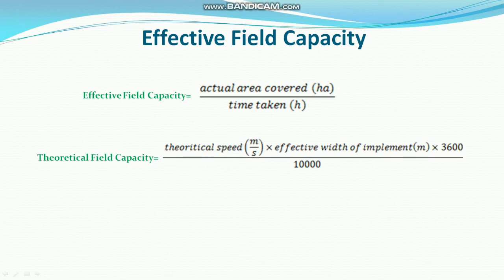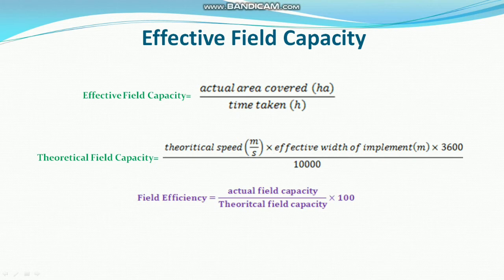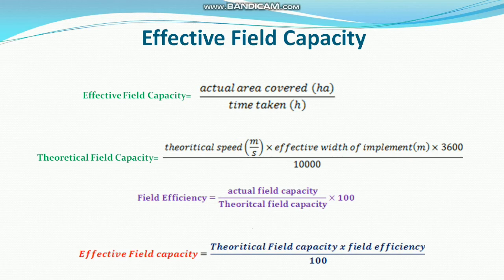Theoretical field capacity equals speed of implement times effective width times 3600 divided by 10000, giving hectares per hour. Field efficiency equals actual field capacity divided by theoretical field capacity — accounting for time lost during turning and adjustments. Once field efficiency is known, effective field capacity equals theoretical field capacity times field efficiency divided by 100, which is used in the performance index formula.